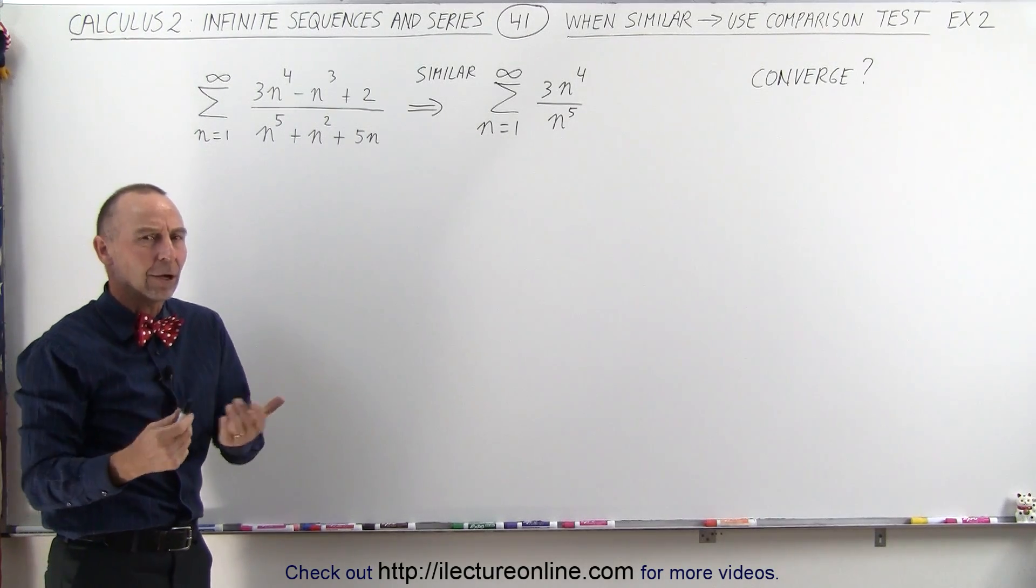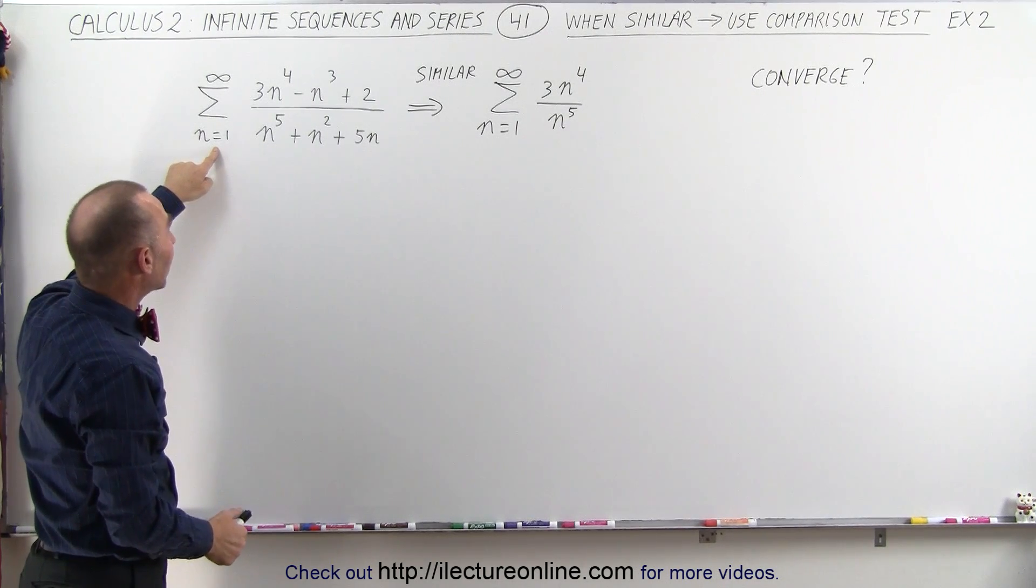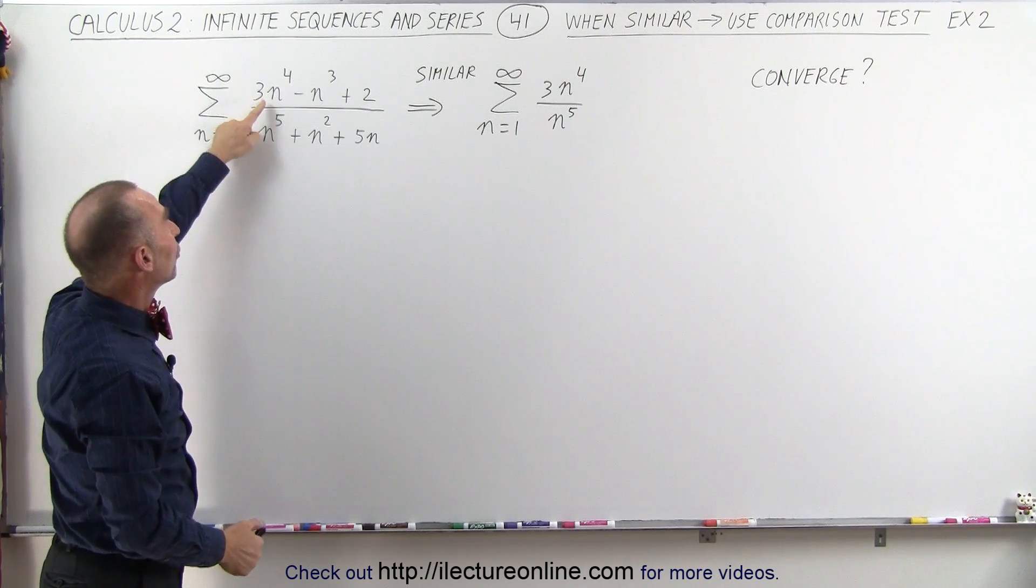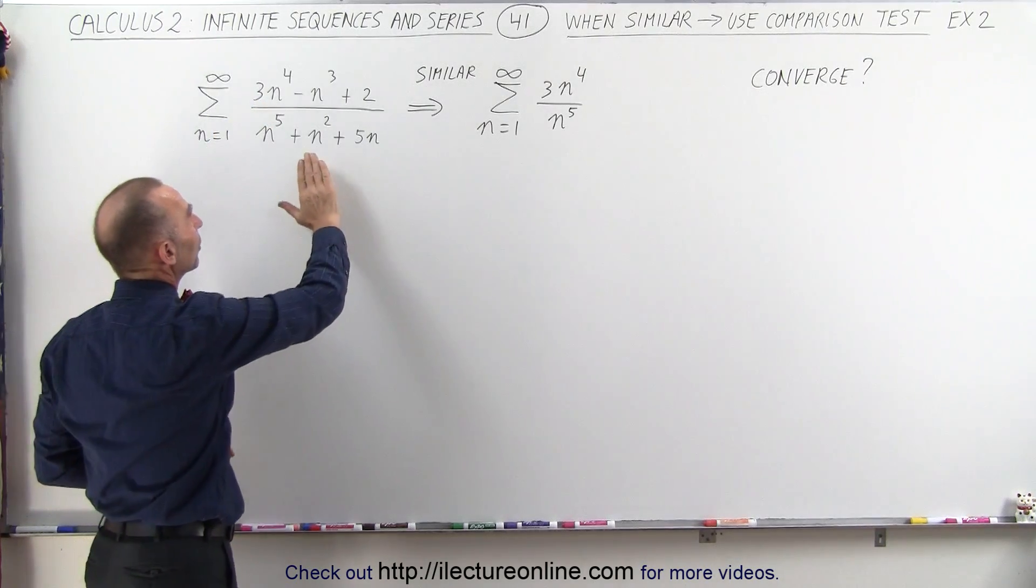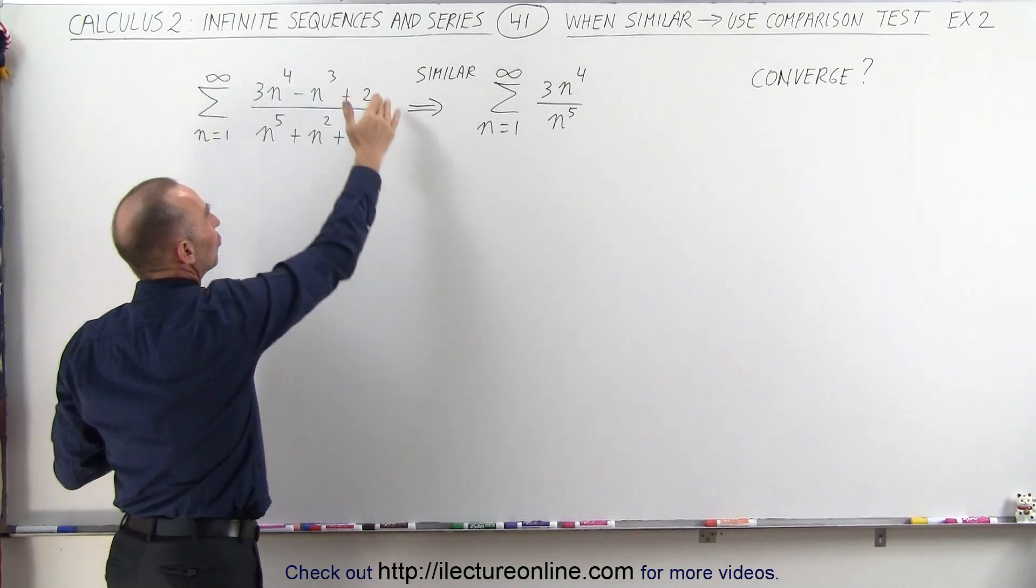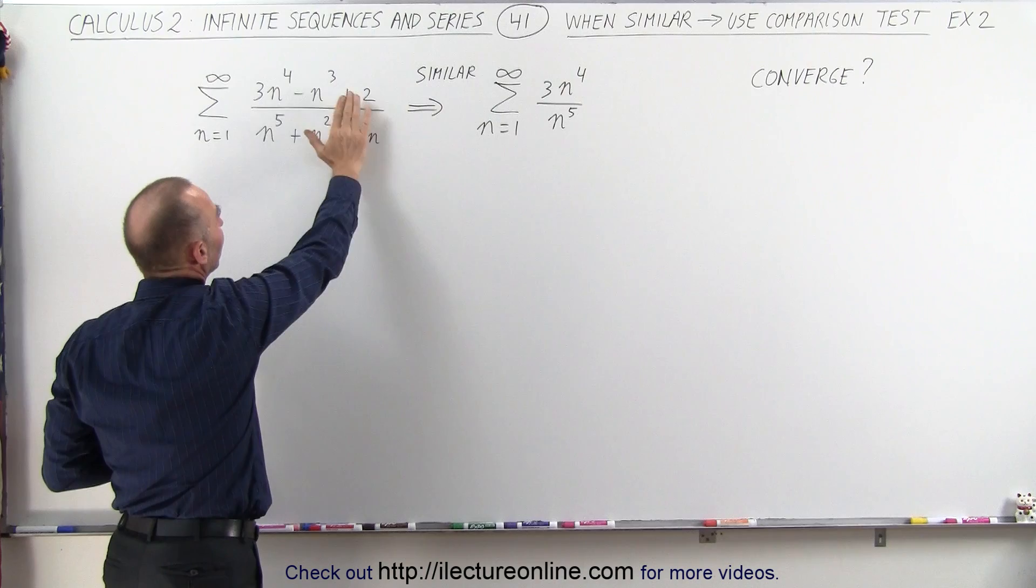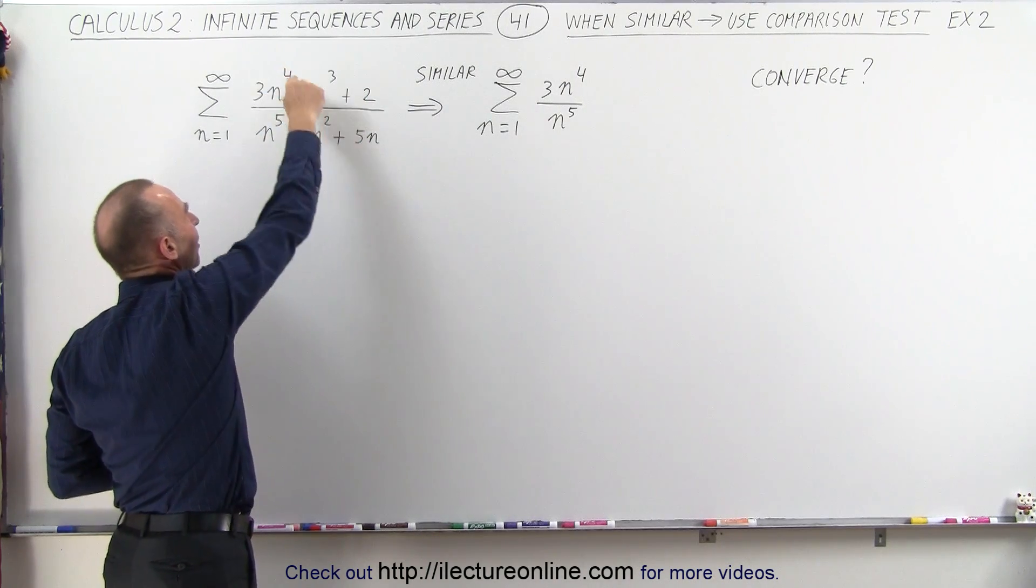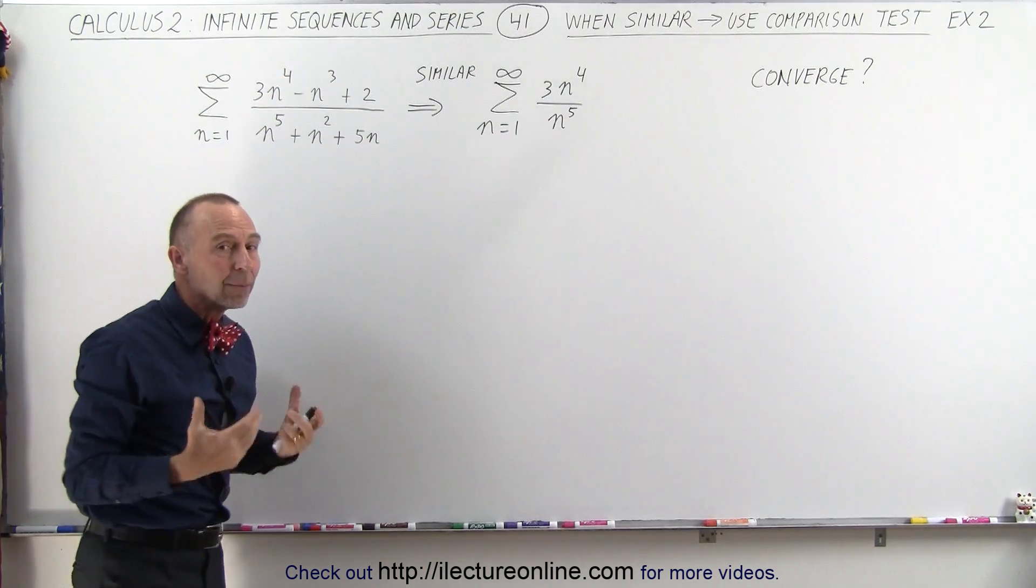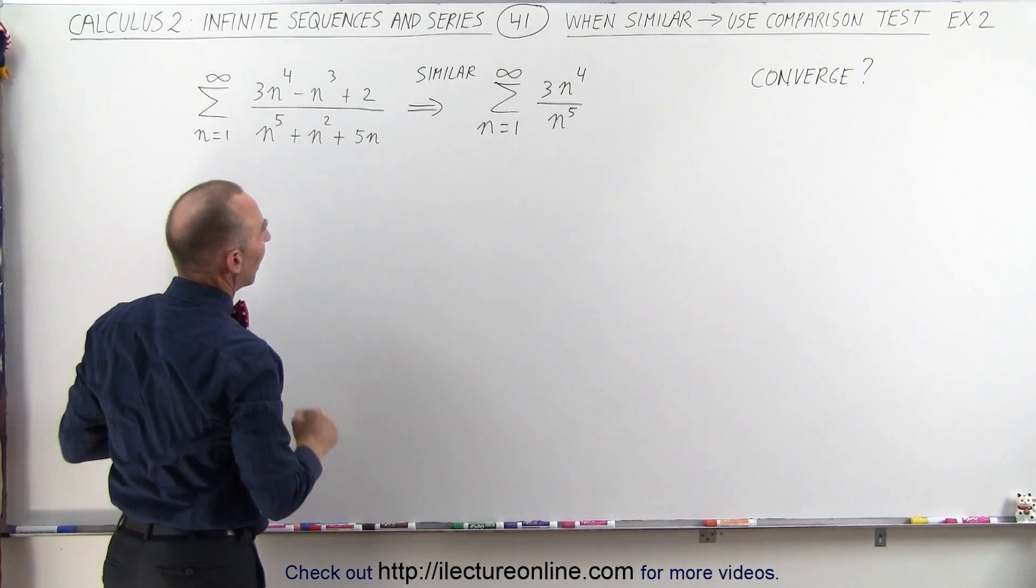You may say, why do I do that? Aren't they important? Well, it turns out as n becomes large, and it will become large quickly, n to the 5th and n to the 4th will far overpower the value that n to the 3rd and n to the 2nd will get, and especially 2 and 5n. So they become insignificant very quickly, so only this drives the infinite series as n becomes large, and therefore, this will determine whether or not it converges.